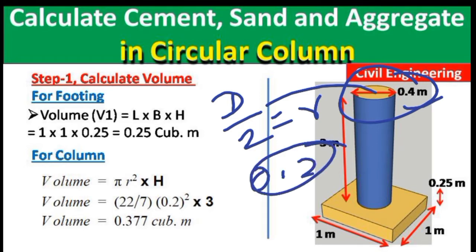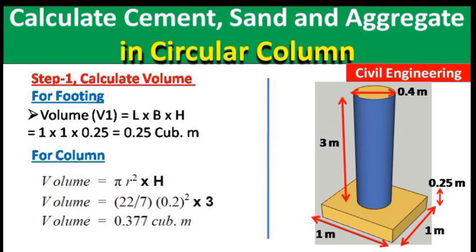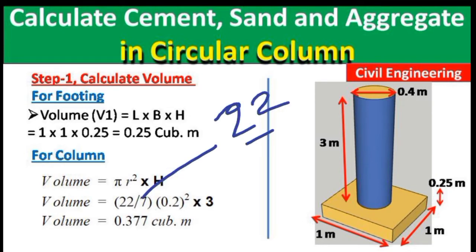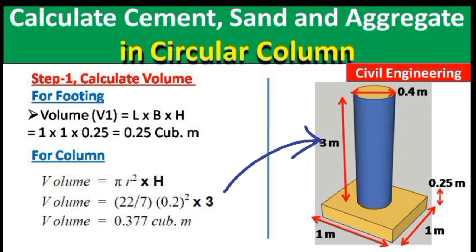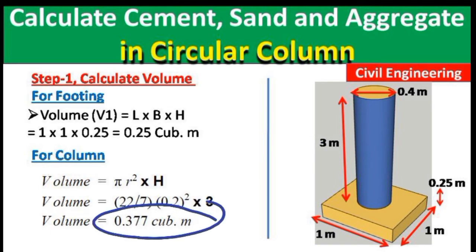Using π = 22/7, r = 0.2 m, and height = 3 m, we calculate: V = (22/7) × (0.2)² × 3. After calculating, the volume of the column = 0.377 cubic meters.